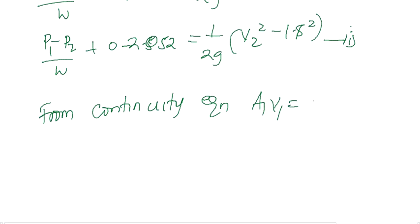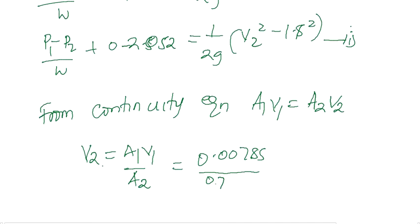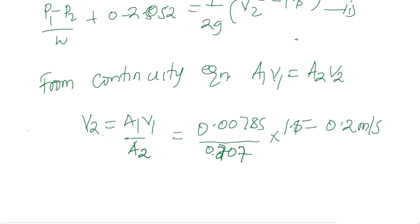From continuity, A1 V1 equals A2 V2, meaning that V2 is therefore equal to A1 V1 over A2, which is equal to 0.00785 out of 0.0707 times V1, which gives us 0.2 meters per second.